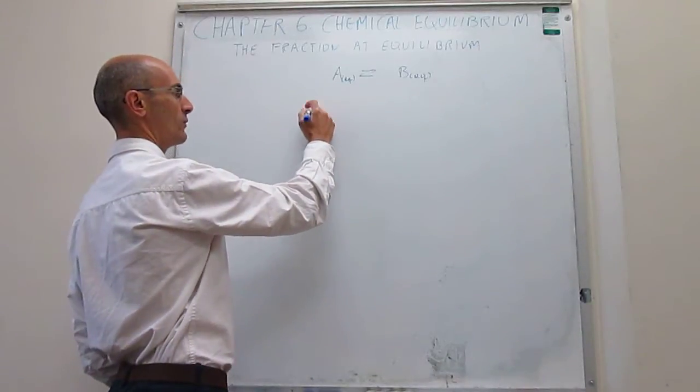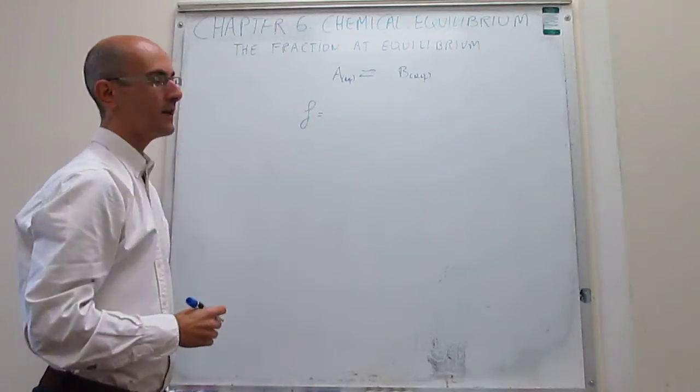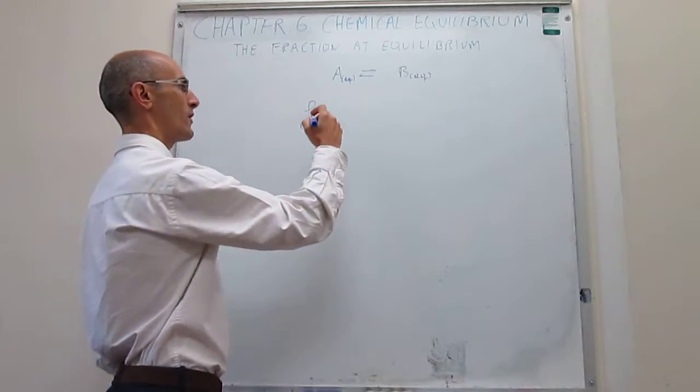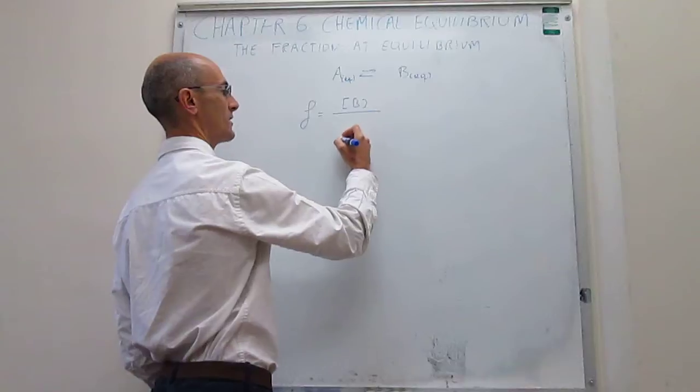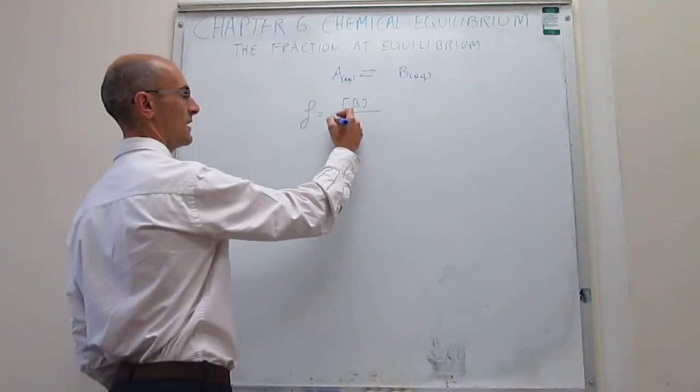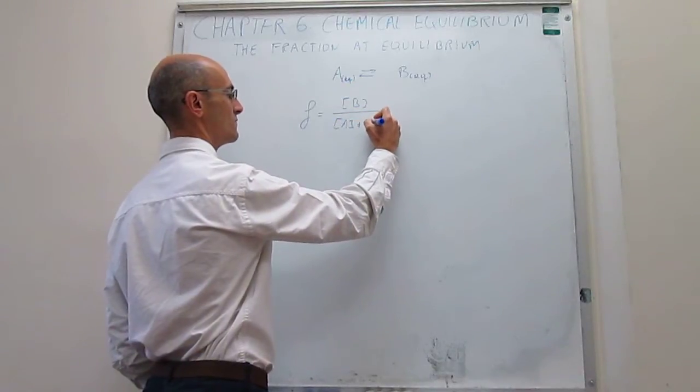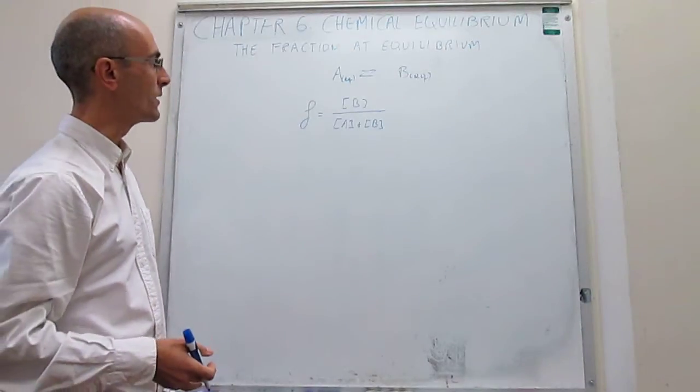What we're trying to calculate here is something called the fraction at equilibrium. The fraction at equilibrium is the concentration of product that you get divided by the total concentration of species in solution. So that will be the concentration of A plus the concentration of B.